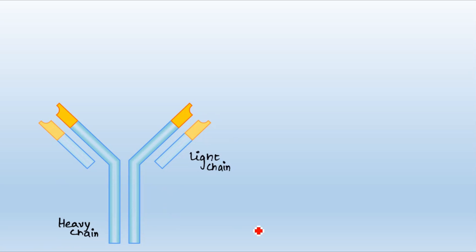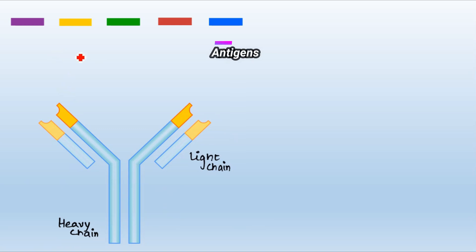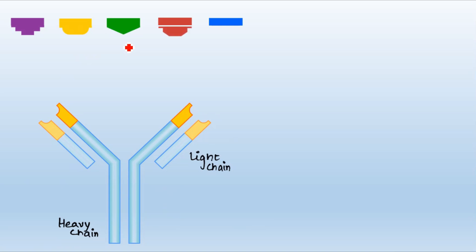In previous videos on B-cell activation and complement fixation we talked about the unique binding between antigens and antibodies. Now let's focus on the antigen. You can see different colored antigens here, and if you look at the lower portion of each antigen they all have their own unique pattern or shape — for example, the green antigen's lower portion looks like a triangle.